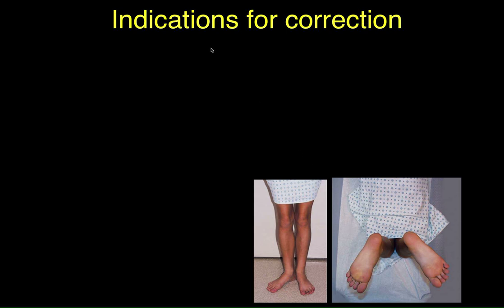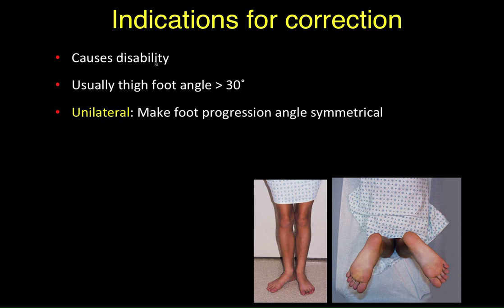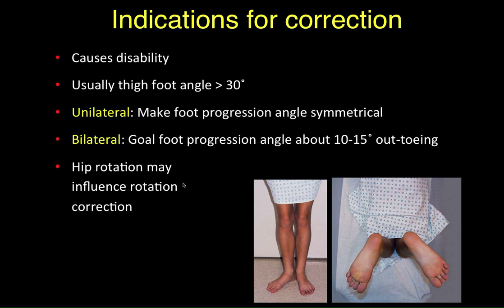What are the indications for correction? First, it should cause some sort of disability, either in function or if it's particularly severe cosmetically, or if the thigh-foot angle is more than 30 degrees out. If it's unilateral, we want to make the foot progression angle relatively the same on both sides. If it's bilateral, we want to bring it into an acceptable range — usually 10 to 15 degrees out is ideal. The degree of hip rotation may also influence the decision, so if the person has anteversion or retroversion, that may affect the amount of rotation necessary for correction.